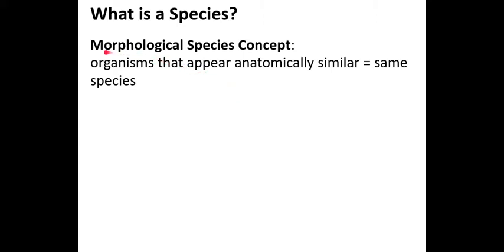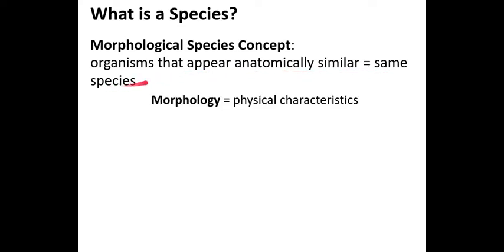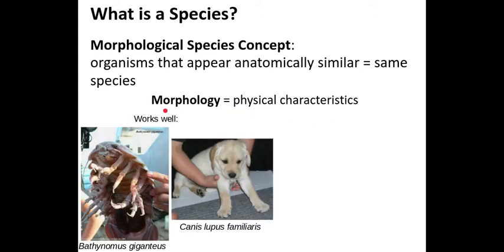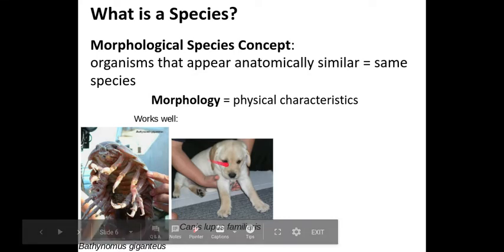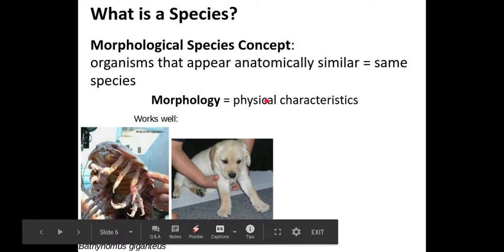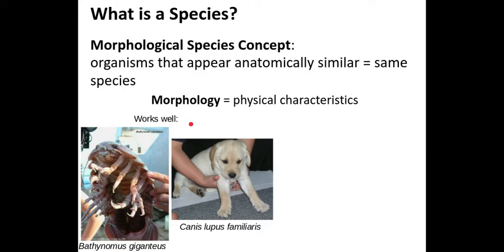The first definition is called the morphological species concept. 'Morphological' refers to the shape and structure of organisms themselves. By looking at how an organism is structured anatomically, we can group things into different species. Organisms whose bodies appear similar would be classified as the same species. This works really well in obvious cases — for example, it's very easy to see the difference between a large ocean-dwelling isopod and a dog.